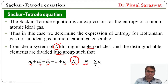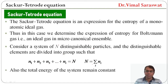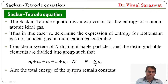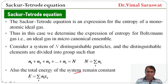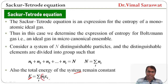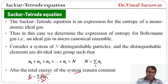Or N equals sigma_i n_i. Also, the total energy of the system remains constant, meaning total energy equals sigma_i n_i * e_i, where n_i are the number of particles in energy level i, and e_i is the energy corresponding to that particular energy level.